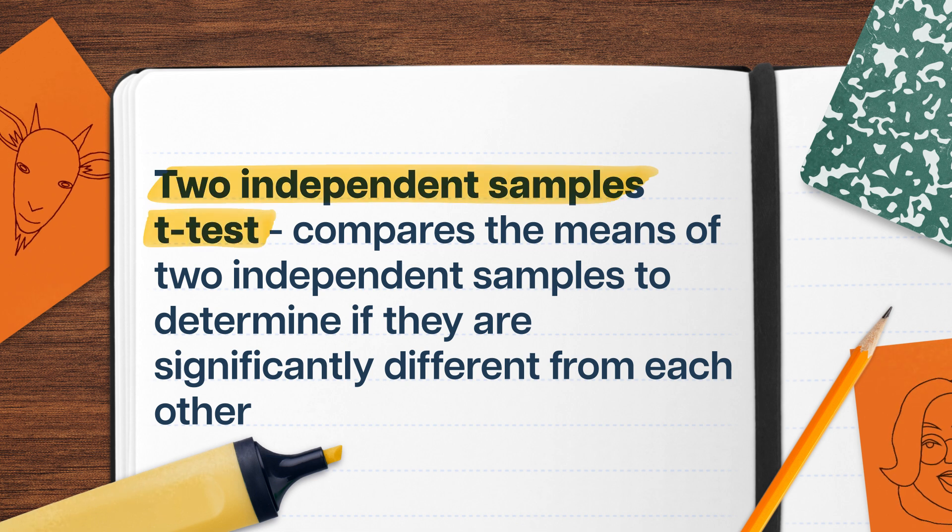Deciding what kind of hypothesis test to use will be key. I need to identify some key features of both the data and our question first. We have data from two groups — one with photos and one without — and those groups contain totally different games, so they seem independent. We don't expect the price of a video game in one group to be affecting the price in the other group. We want to compare the means of each group, and we don't actually know the true population standard deviation of each group's prices, so we can't use any methods that rely on those numbers.